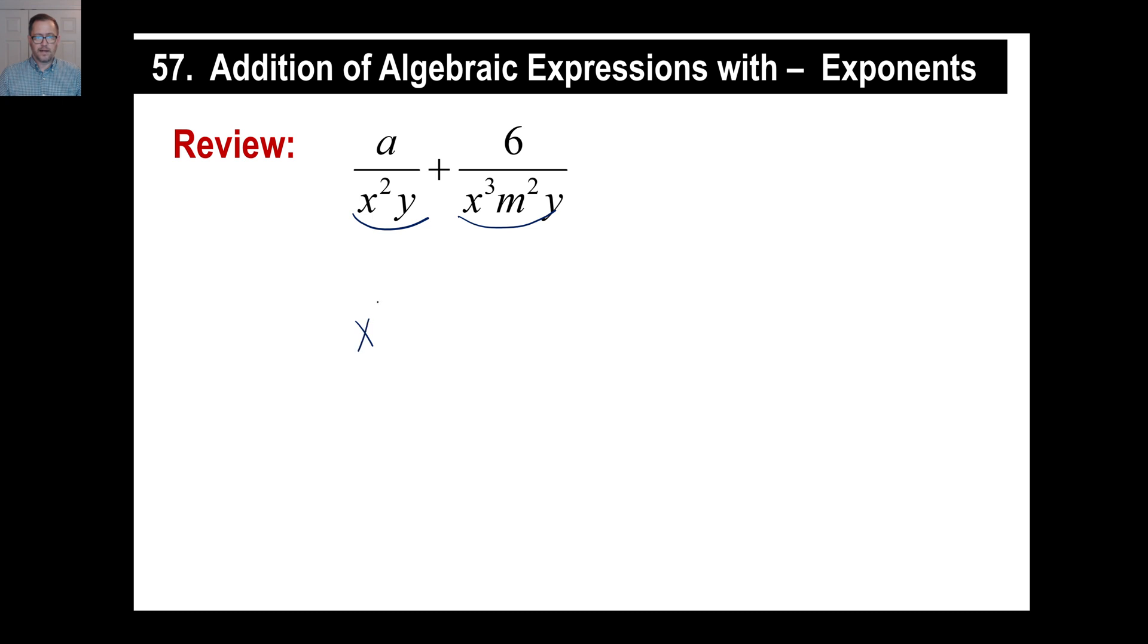I need to pick the one with the higher x on it. So x³ is what we want to pick. m² needs to be in both of them, and y is in both of them already, so we can just keep that the way it is. And we already have our a here.